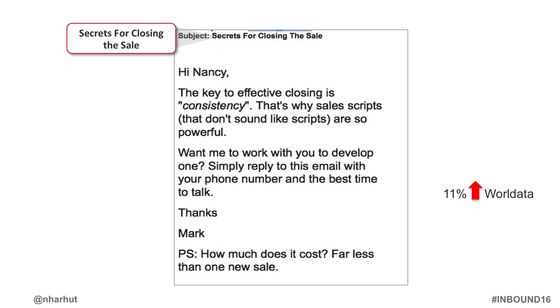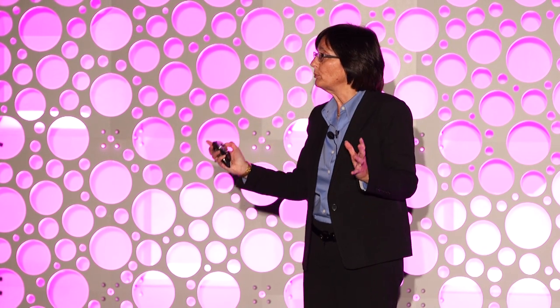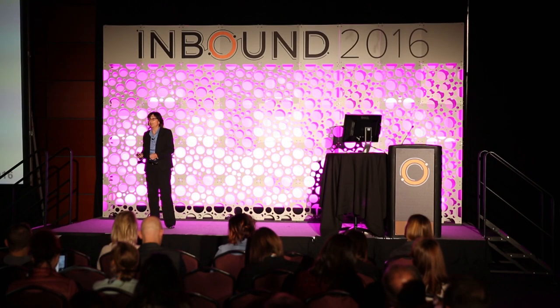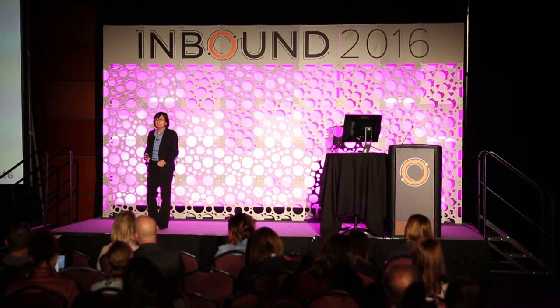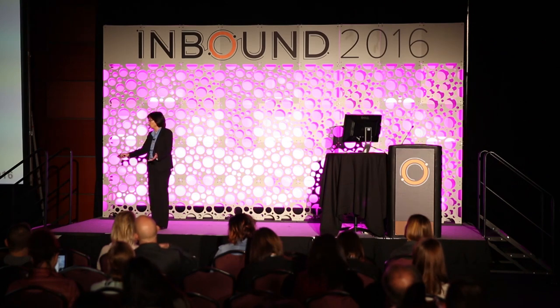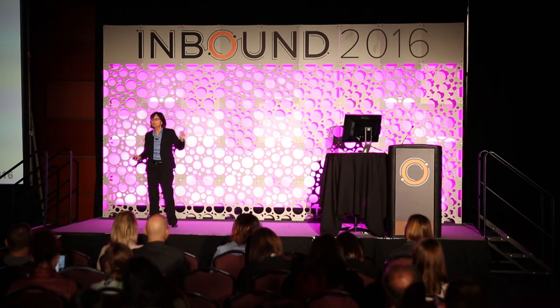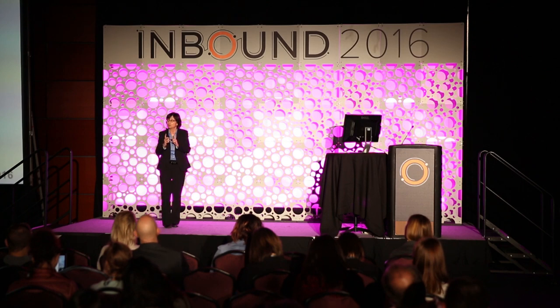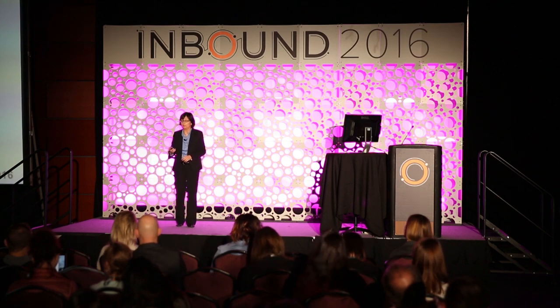The fourth eye magnet word is 'secret.' World Data found you can get an 11% lift in opening rates simply by including that word in your subject line. Social scientists have found that people are more persuaded by information they feel isn't readily available. You can also convey this with phrases like 'the inside story,' 'a sneak peek,' or 'confessions of.' Secret is a fabulous choice because it's a short, succinct word and we know it will get an 11% lift in opening rates.